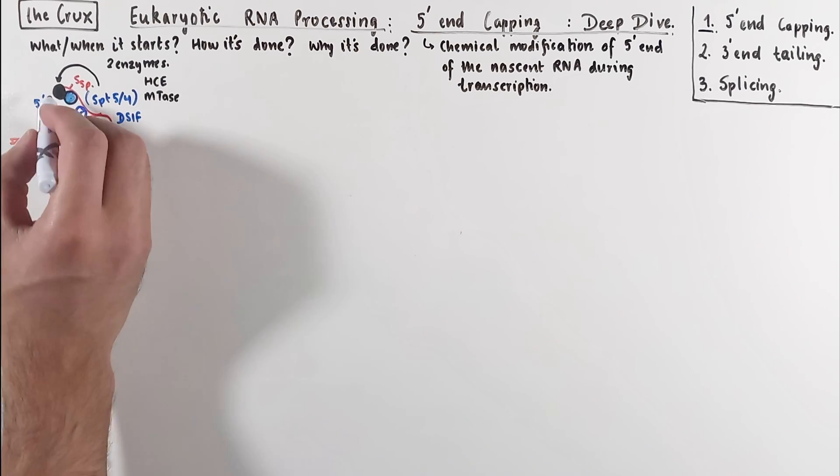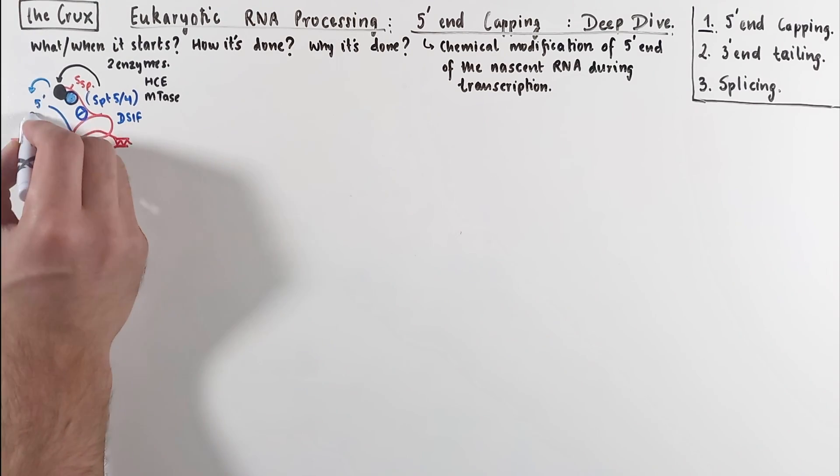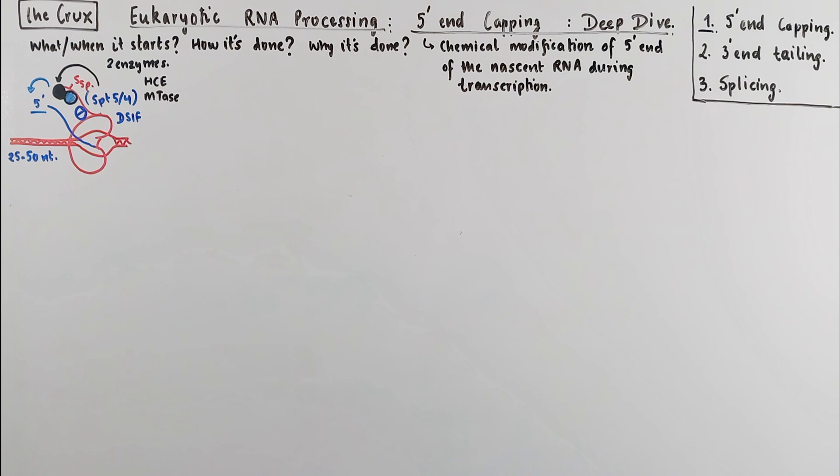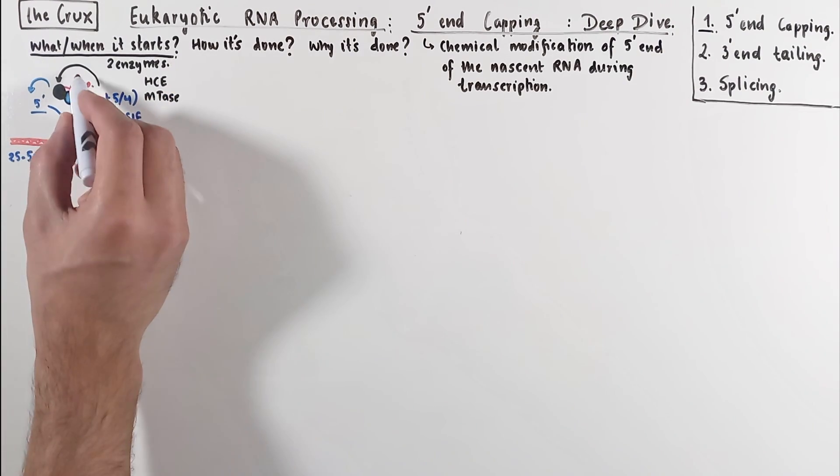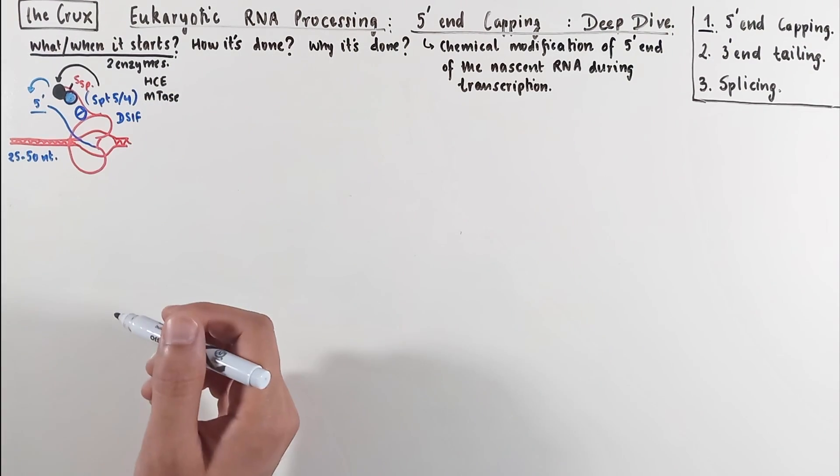And it is the activity of these two specific enzymes, the capping enzyme and the methyltransferase, that establish the cap on the 5' end of the RNA. So when we ask the question when and what starts this capping process, it is the pausing of the RNA polymerase and recruitment of these two enzymes at the C-terminal domain of the RNA polymerase.